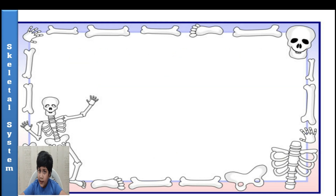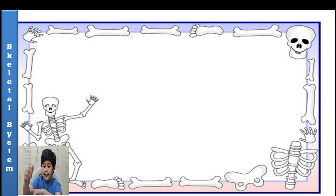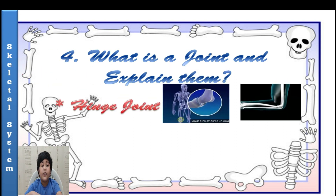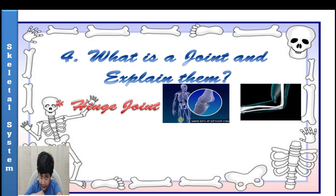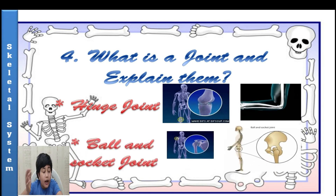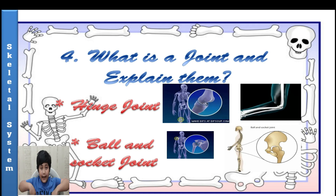We cannot move our hands if two bones were not connected. So what is a joint? A joint is a point where two or more bones meet. There are two types of joints: hinge joint, which is present in our knees and elbow, and ball and socket joint, which is present in our shoulders and hips.